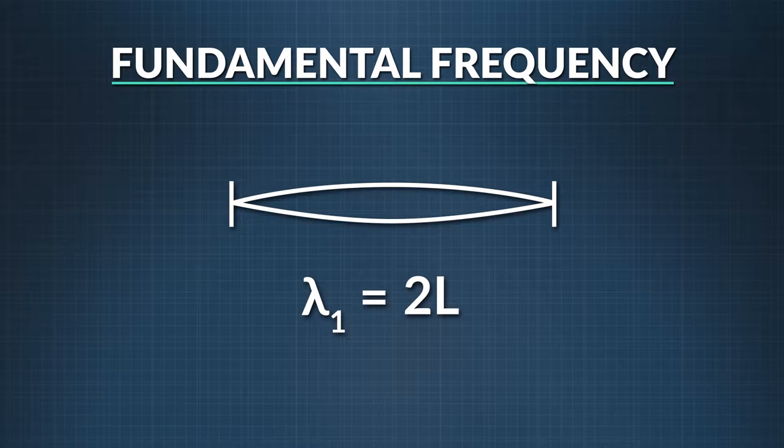The simplest standing wave shape corresponds to the fundamental frequency, written f sub 1, also known as the first harmonic. Each harmonic must have a node on each end, since both ends of the string are attached to a rigid barrier.